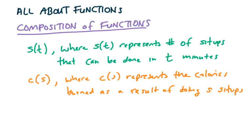So a composition involving these two functions could look like c(s(t)). And what that means is that you're inputting s(t). s(t) becomes the input, which is the number of sit-ups. And then you're evaluating the c function, which is the number of calories, as a result of doing that many sit-ups.